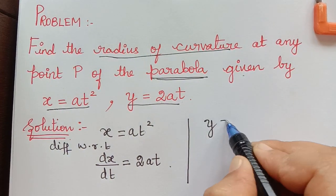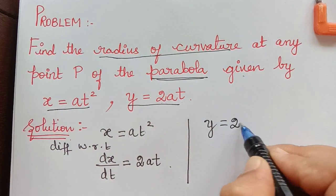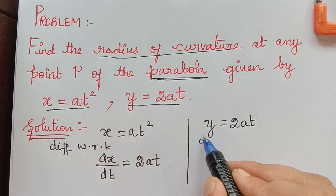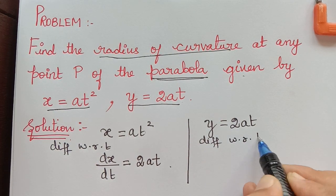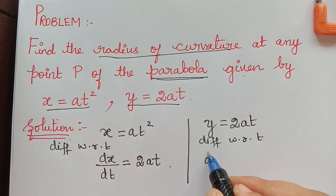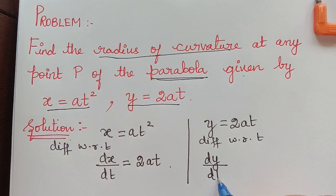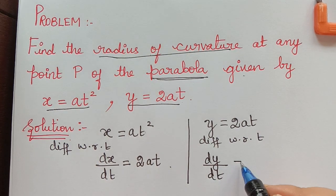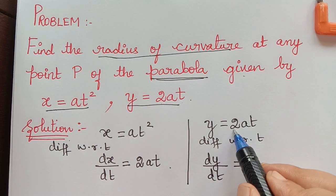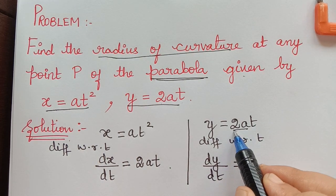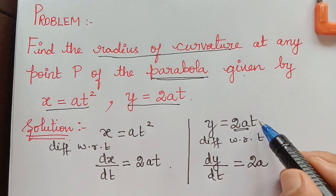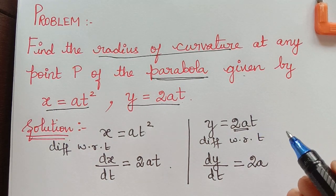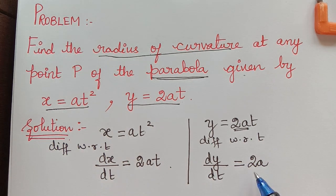In a similar way, we shall take y equals 2at and differentiate this with respect to t. So we get dy/dt equal to — 2 and a are constants, so they remain as is, and the differentiation of t is 1 — so we get dy/dt equals 2a.